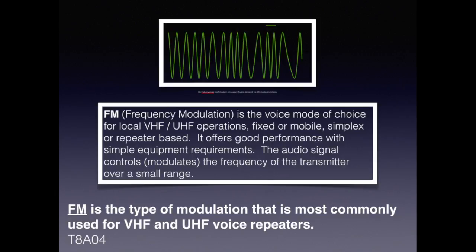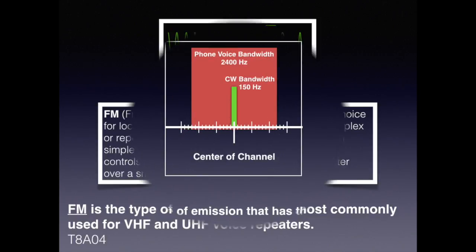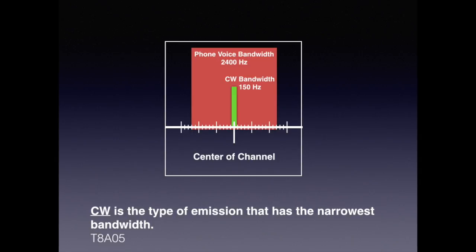Because frequency modulation is low in noise, simple to operate, and the equipment is fairly low cost, it's commonly used for VHF and UHF repeaters. For the exam, know that FM is the type of modulation most commonly used for VHF and UHF voice repeaters. CW or Morse code bandwidth is 150 hertz compared to 2400 hertz for voice, so it's substantially narrower. Know that CW is a type of emission that has the narrowest bandwidth.